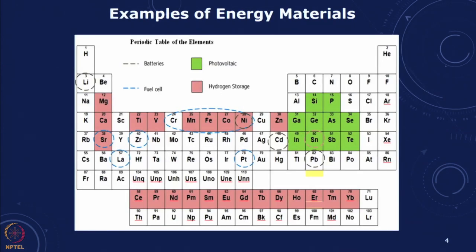If we look at the periodic table, there are several materials including rare earths and materials which are becoming important for batteries, for storage, and for photovoltaics. You have a whole set of materials coming in for photovoltaics, lead-acid batteries, cadmium telluride, chromium, nickel, cobalt, lithium, and materials used for hydrogen storage. Many of these materials are located in specific regions and few countries, and they involve significant energy use in their extraction.